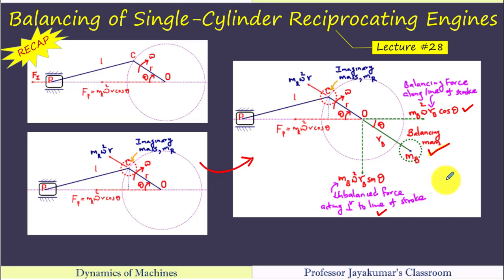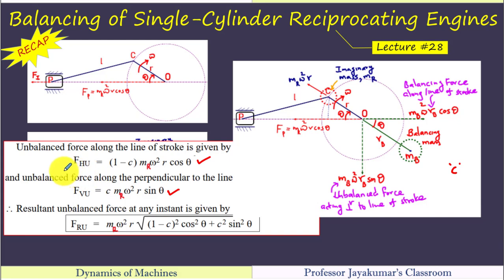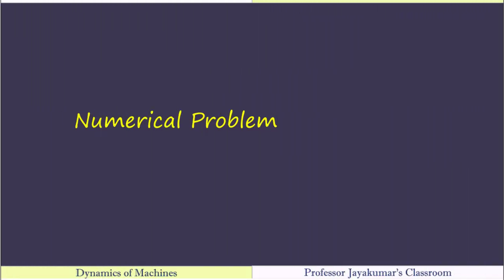That's why we call it as a partial balancing of reciprocating engines. So in order to make a balance, we consider portion C of the reciprocating masses alone to be balanced. I can find resultant unbalanced force at any instant by using this equation. Now let us move on to the numerical problem.